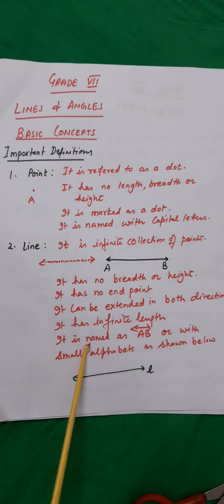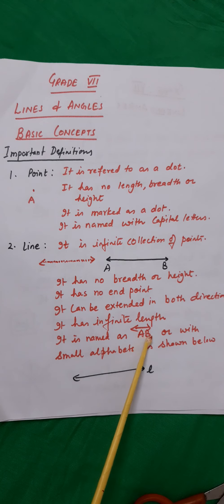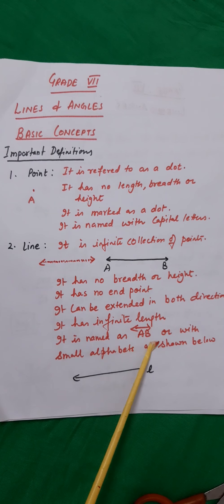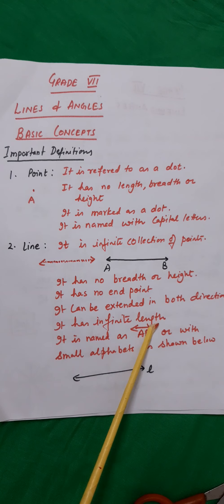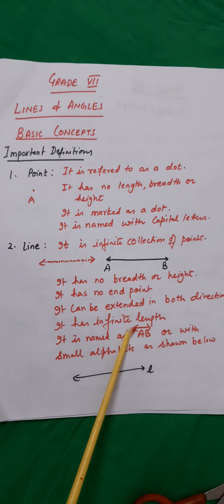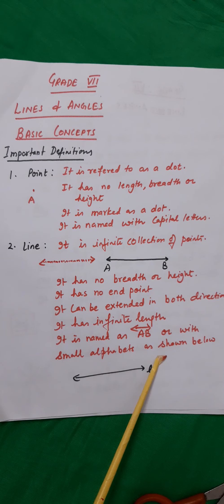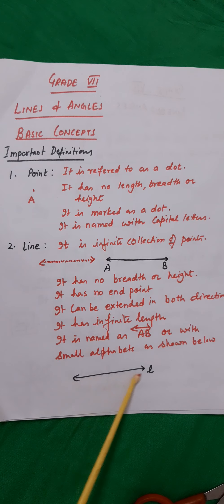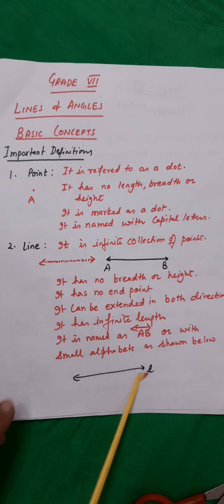It is named as AB, and you can write two vertices here — two points A and B — then put a line with arrows showing both directions. Or with small alphabets as shown below — you can draw a line and name it as a small alphabet.